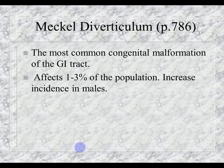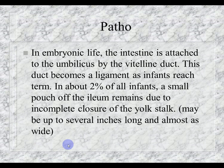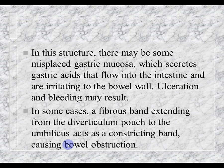Moving to page 786 — Meckel's Diverticulum. This is the most common congenital malformation of the GI tract, affecting 1–3% of the population, more in males. In embryonic life, the intestine is attached to the umbilicus by the vitelline duct, which becomes a ligament at term. In about 2% of infants, a small pouch off the ileum remains due to incomplete closure — 2 to 4 inches long and wide. Displaced gastric mucosa in that structure produces gastric acids that overflow into the intestine, causing ulceration and bleeding. A fibrous band may also form, causing obstruction.